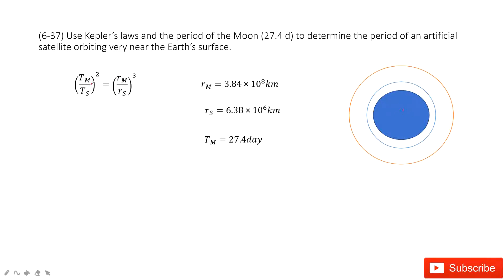So for this one, it looks like we know the period for the Moon, right? It's around one month. And we know the radius for the Moon. We can check our textbook. And we can also know the radius for this satellite.